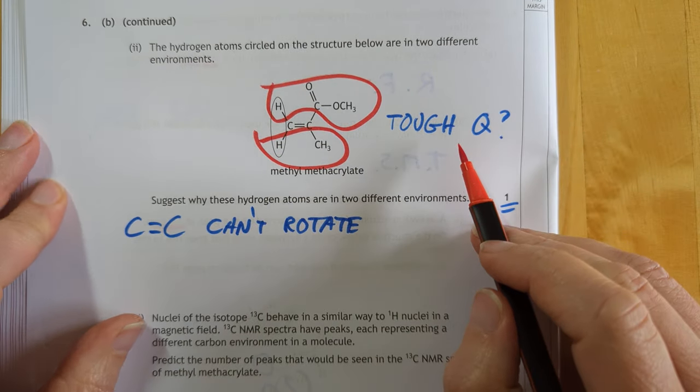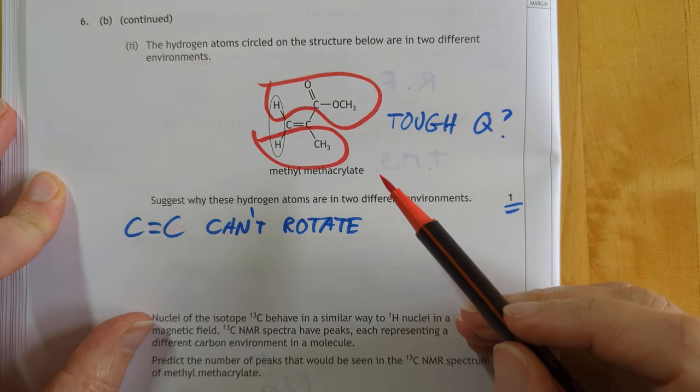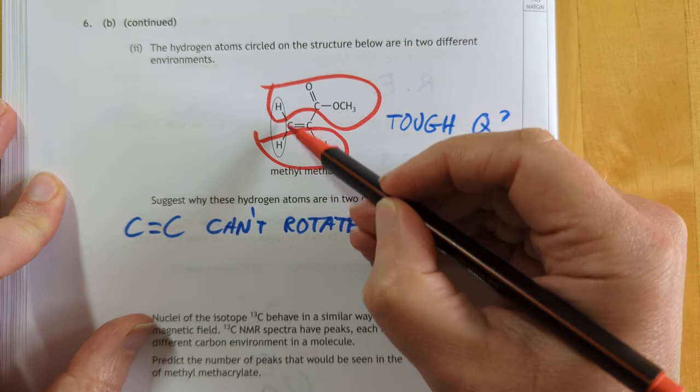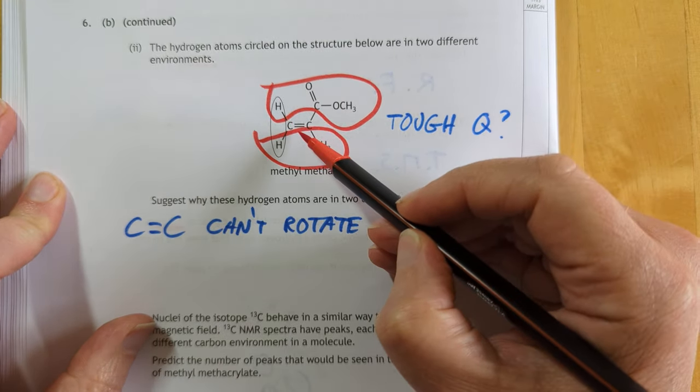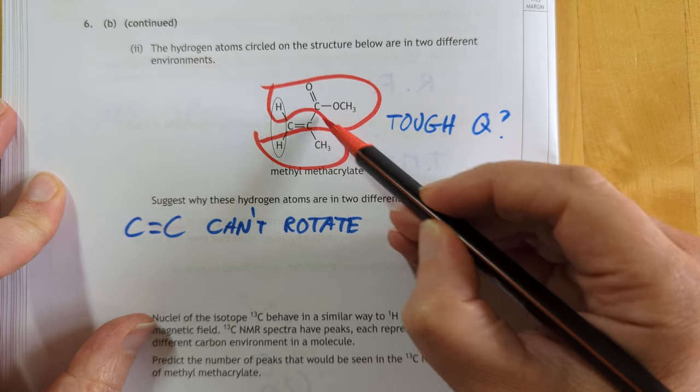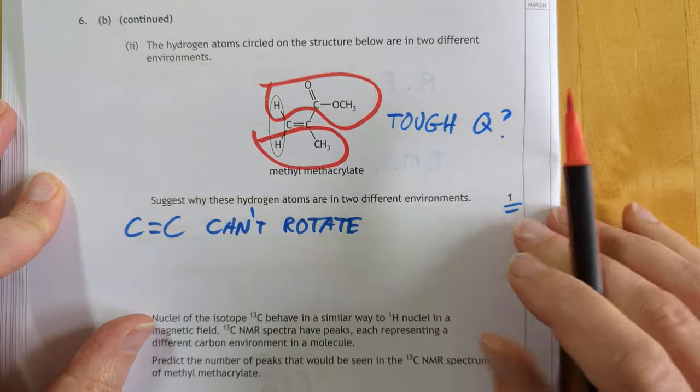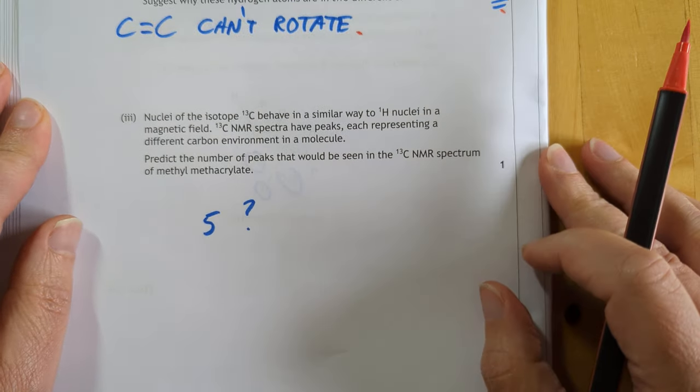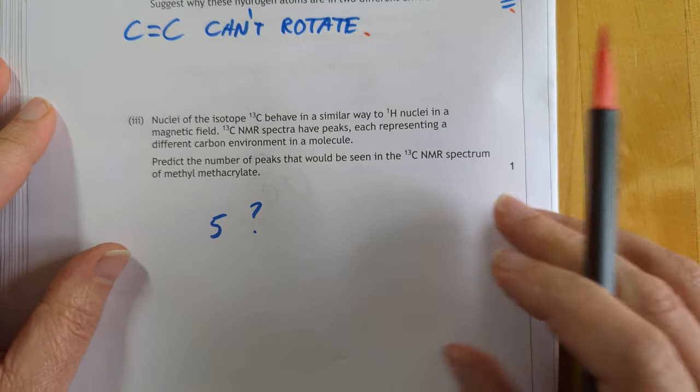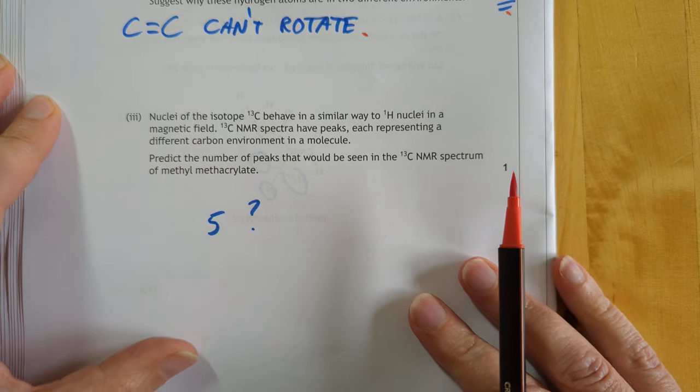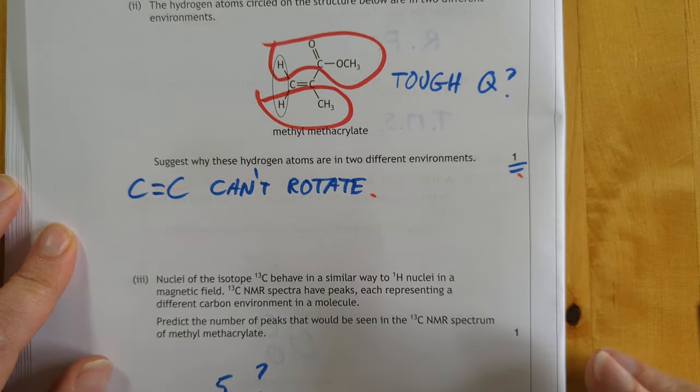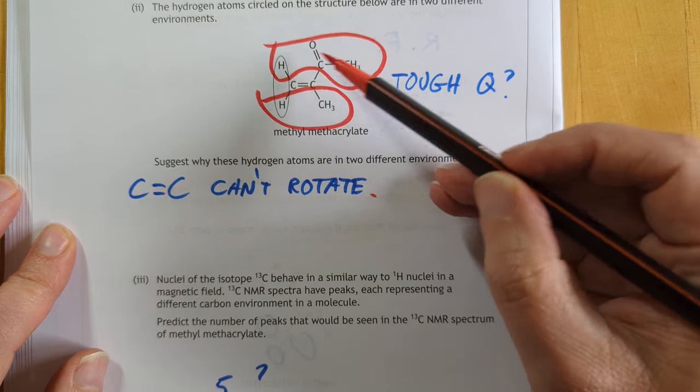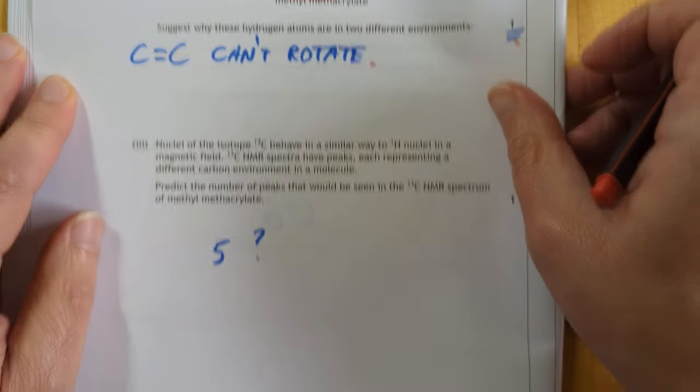This one here, I've said this is a tough question, because I don't think I've ever taught this. It's sort of a problem solving, be interesting to see if anybody else knows it. These two hydrogens at first glance should be equivalent to each other, but because this bond here cannot rotate, then this hydrogen sees this environment and this hydrogen sees this environment. So I reckon that, but yeah, tough question, don't worry if you can't get it. It's only one mark. And nuclei of the carbon atom, so we're wandering into carbon NMR as opposed to just proton NMR which is what we normally teach. So methyl methacrylate contains one, two, three, four, five carbons, and each of these are all different to each other in terms of their environment. So that's why I've gone with the five.